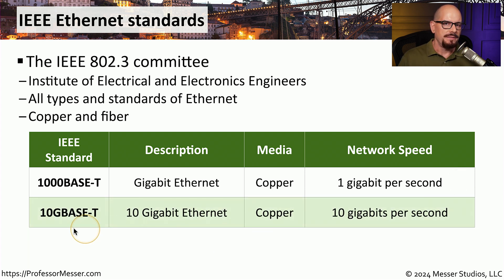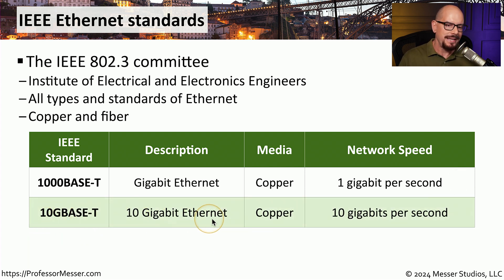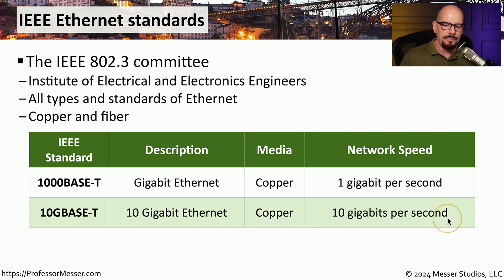A newer version of that standard is the 10GBASE-T, or the 10 gigabit ethernet network. This also uses twisted pair copper cabling and operates at a speed of 10 gigabits per second.